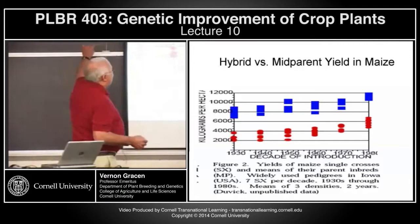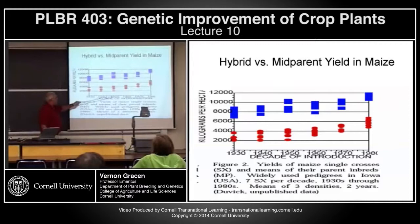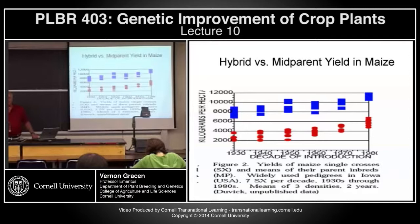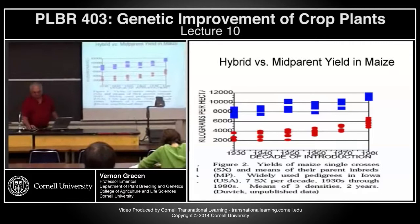Some data from maize: this is the average yield of hybrids grown in the 30s, 40s, 50s, 60s, 70s, and 80s, compared to their mid-parent yield of their inbreds. You can see there's significant yield advantage of the hybrids. In maize, most inbreds — particularly in the early years — were not very good yielders at all.